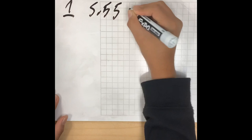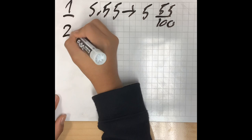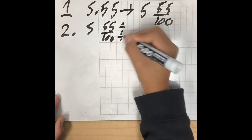Alright, step number one. Take 5.55 and turn that into 55 over 100. And then take that to step number two. 55 over 100.